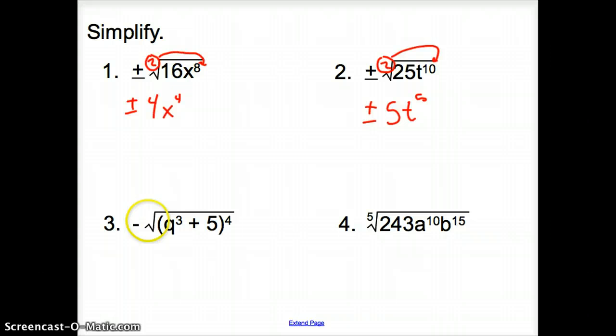With 3, again, it's still a square root with an implied 2 here. We have a negative sign down, so I'm going to bring that down. But now, ladies and gentlemen, this stuff is all to the 4th power.